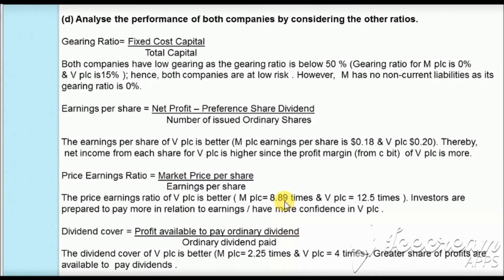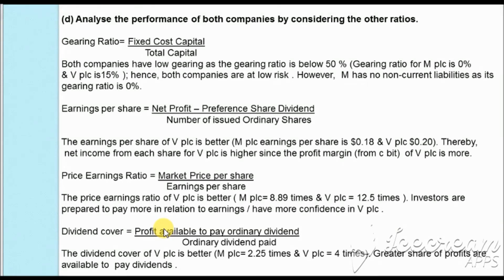MPLC has a price-earnings ratio of 8.89 times and VPLC has 12.5 times, meaning investors are willing to pay a higher market price for VPLC as they are more confident in its future. For dividend cover, the formula is profit available to pay ordinary dividend divided by ordinary dividend paid. Since VPLC has higher profit, its dividend cover of 4 times is better than MPLC's 2.25 times, meaning VPLC has a higher dividend cover ratio.